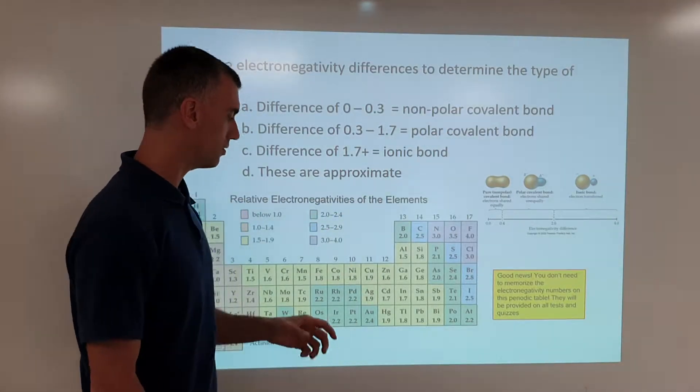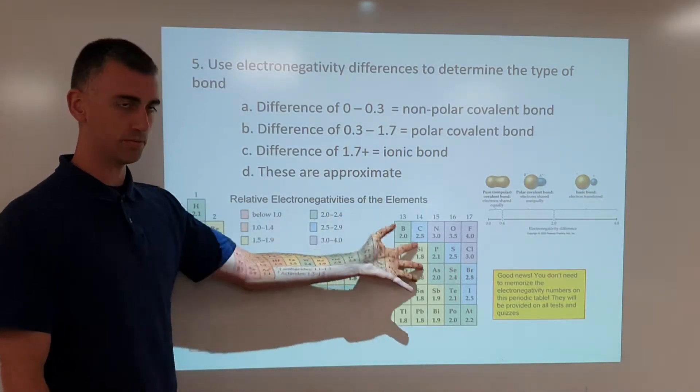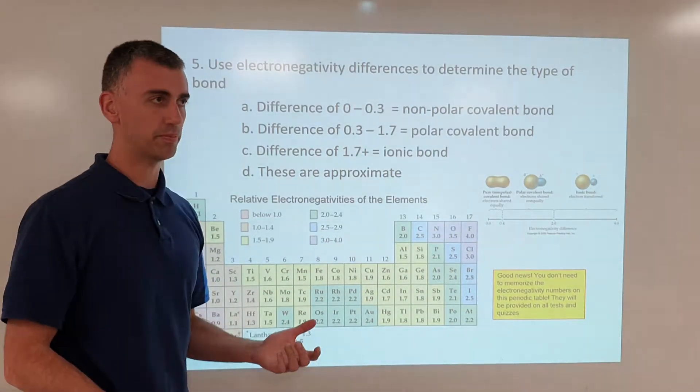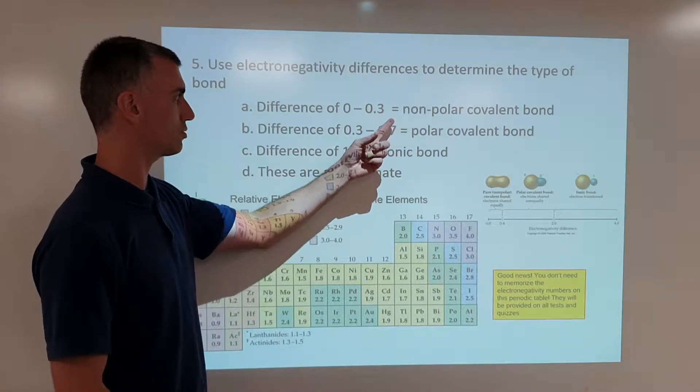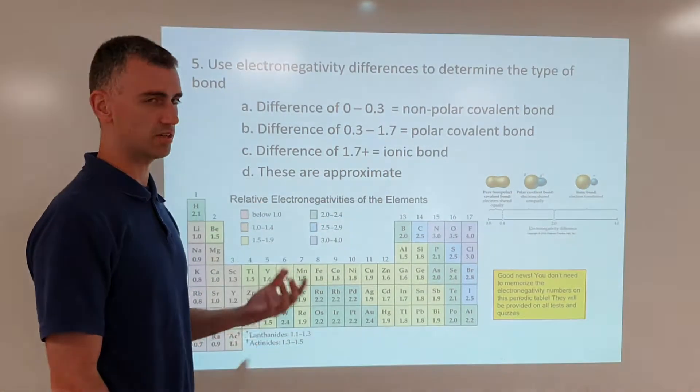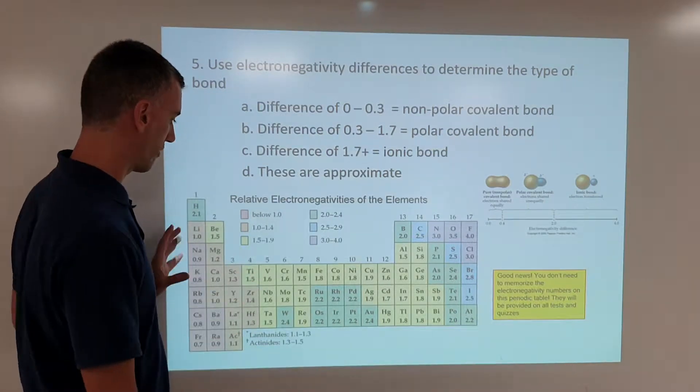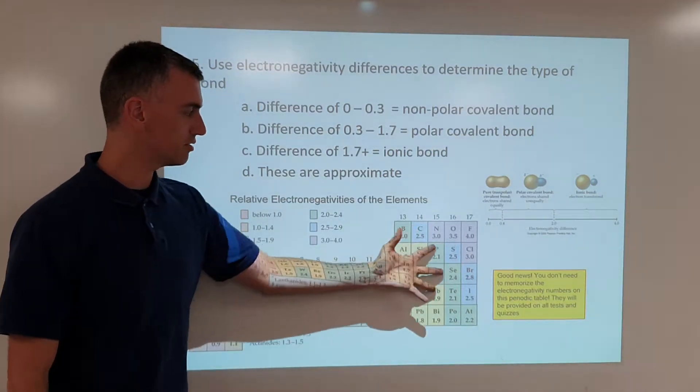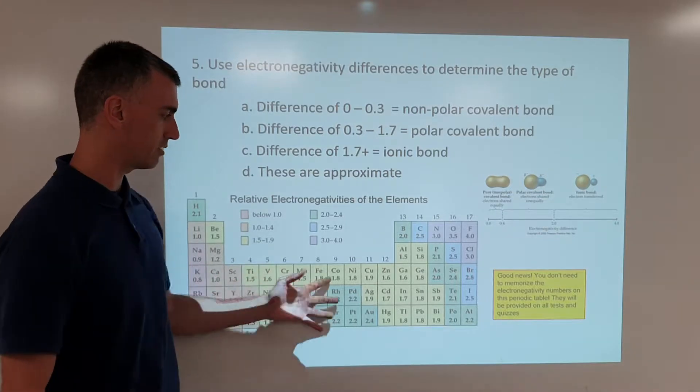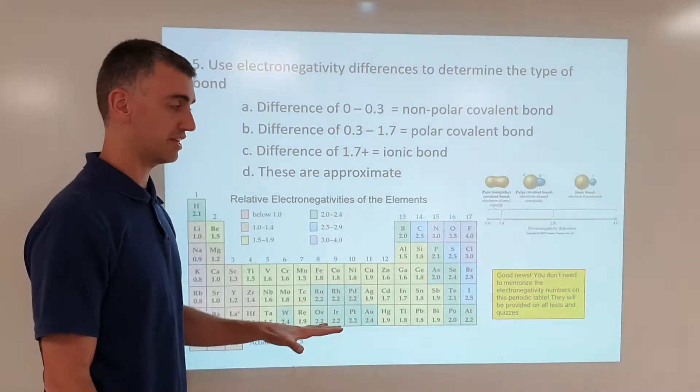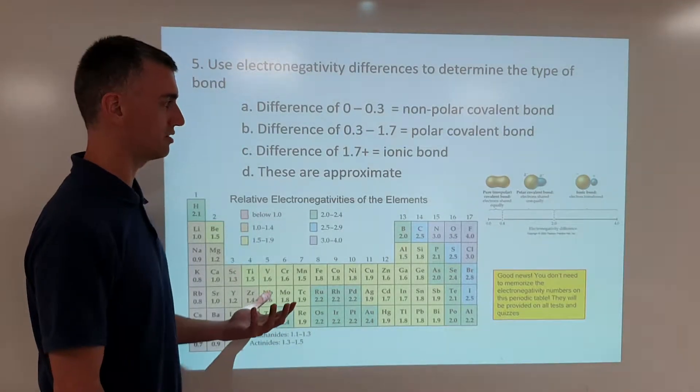The goal here is to use a table such as this to look at a compound and make a prediction of which of these three might form based on the identity of elements bonding together. The good news is you do not need to memorize this table. You don't need to memorize that fluorine is 1.9 or nitrogen 3.0. This will always be given on the exam. But here's how you use it.